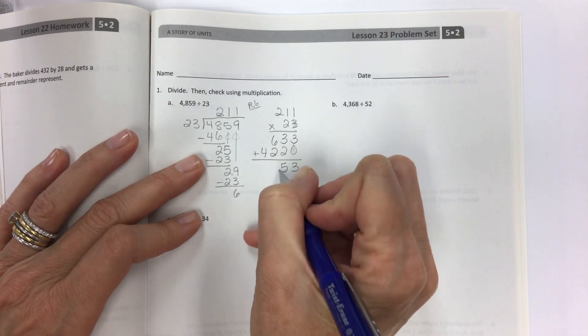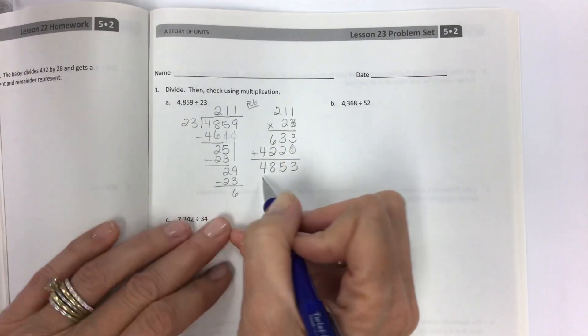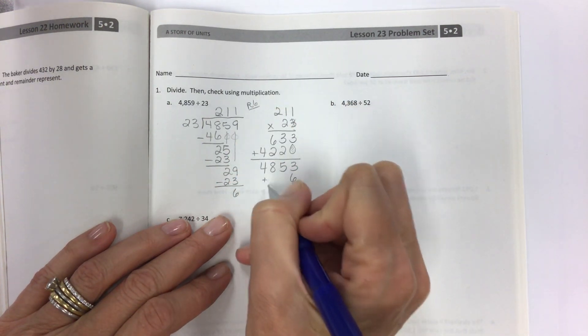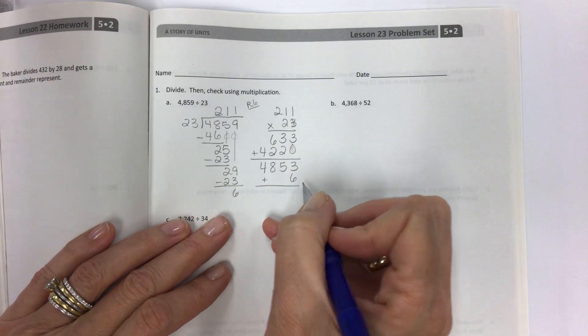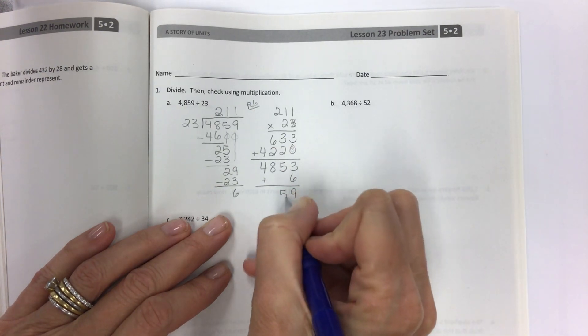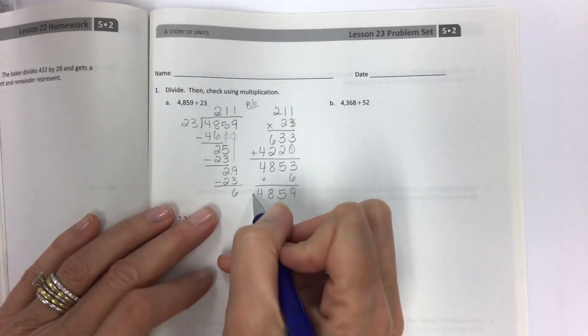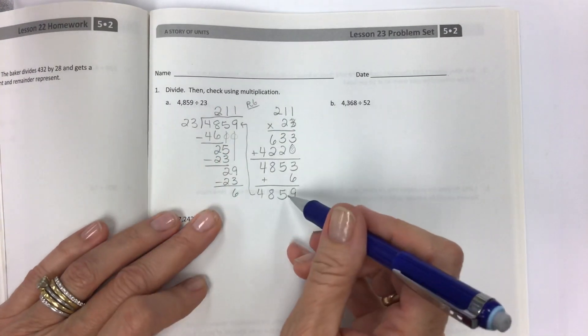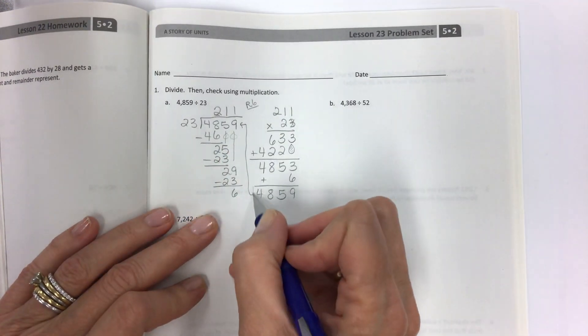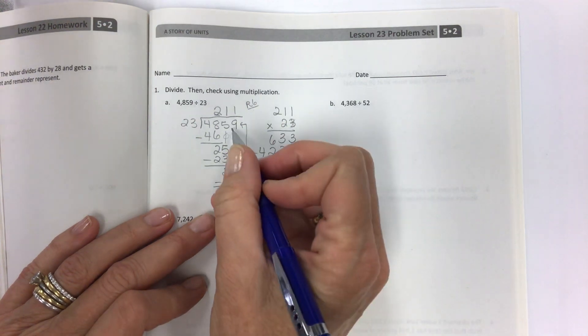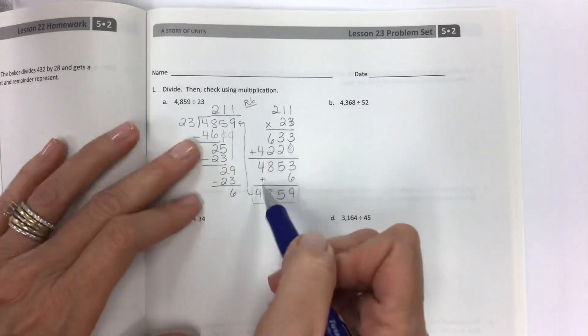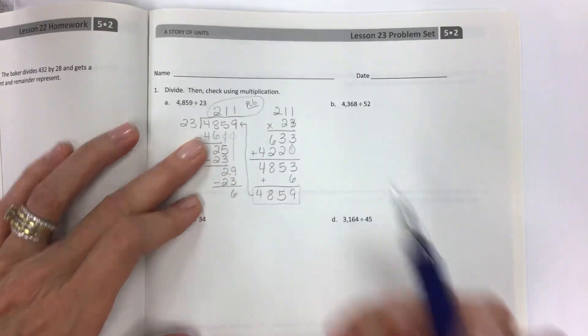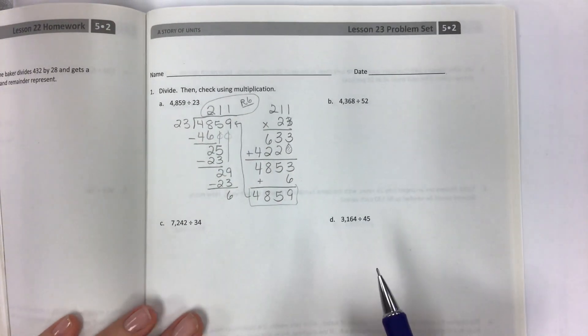Line up carefully. Add, add, add, add. 4,853, lovely, except that I still need to add my 6 remainder. And we have 9, 5, 8, 4. 4,859 and check. So when you get down here, the last step, this is the dividend that I started with. If you get this, then in all likelihood, that is correct. So let's move on.